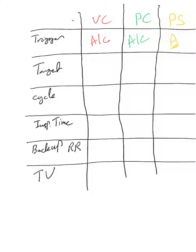For target, volume control is a flow target. Pressure control, from its name, is a pressure target. And the same for pressure support ventilation, it's a pressure target.